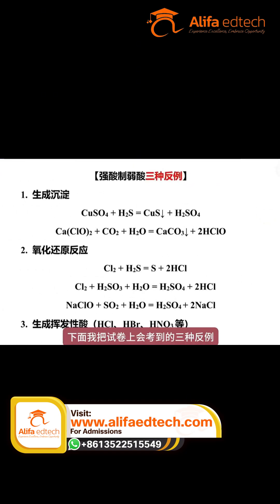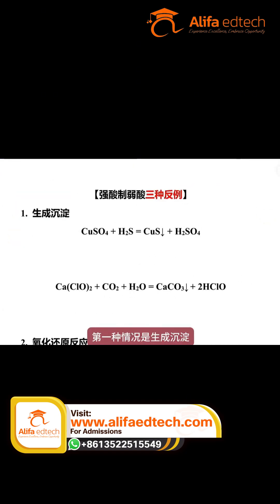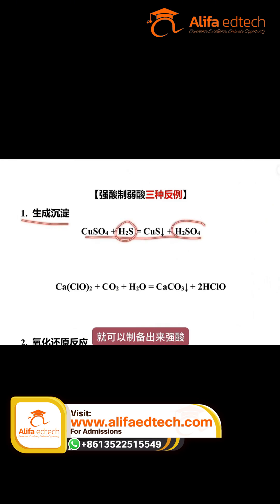Next, I'll explain the three types of counterexamples you'll see on tests. The first case is the formation of a precipitate. Through this reaction here, hydrosulfuric acid, a very weak acid, can produce a strong acid.